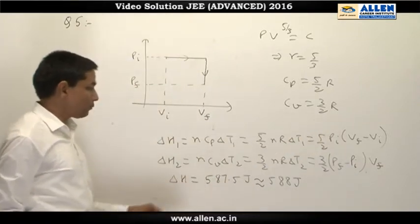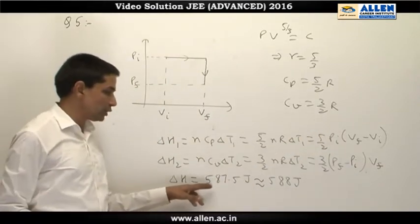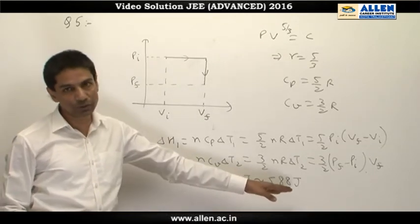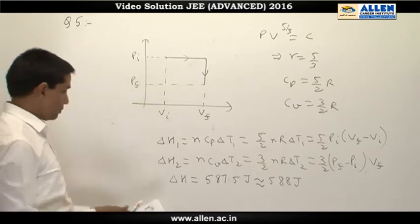If we sum up both of them, the total heat given comes out to be 587.5 joules, which can be rounded off to 588 joules. In this case the answer will be C.